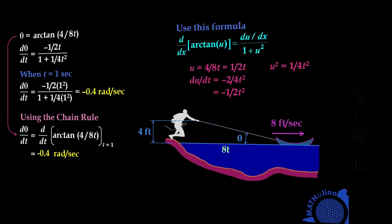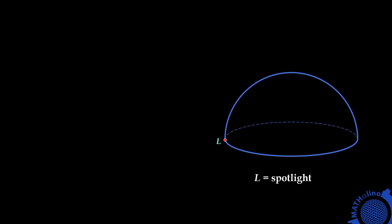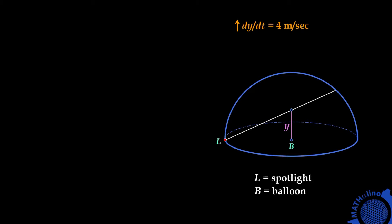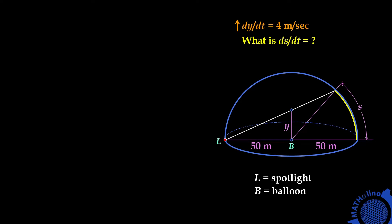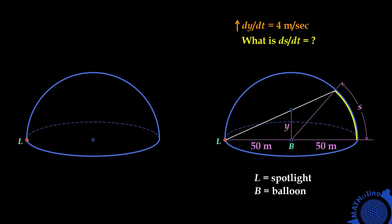Now let us go to example number 3. We have a hemispherical dome. At the circumference of the dome there is a spotlight, and at the middle of the dome there is a balloon that is released vertically at 4 meters per second. The spotlight will follow the balloon, so the balloon will cast a shadow on the roof of the dome. The question is: how fast does this shadow move along the roof? Let us call the distance traveled by the shadow S, and the radius of this dome is 50 meters. We are looking for dS over dt. Note that even if the balloon rises at a constant rate of 4 meters per second, the shadow will not move at a constant rate.